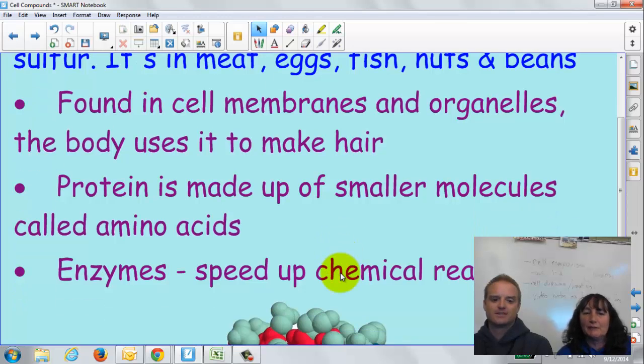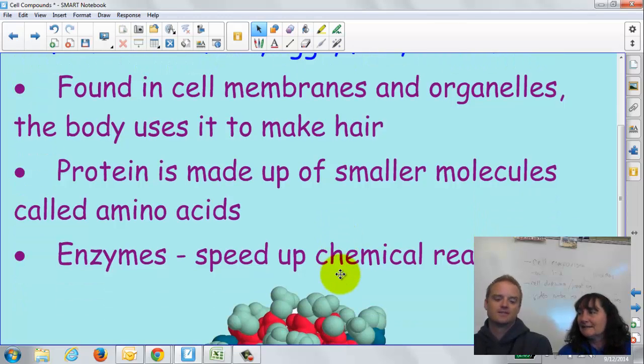So those proteins are made up of smaller molecules, and those are called amino acids. And where do we get amino acids from? Well, that's them. We go back down to the elements. Oh, okay.